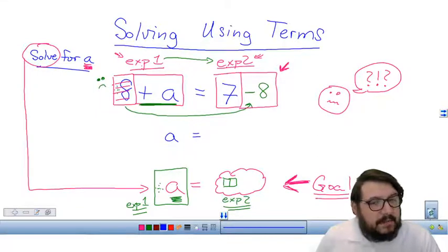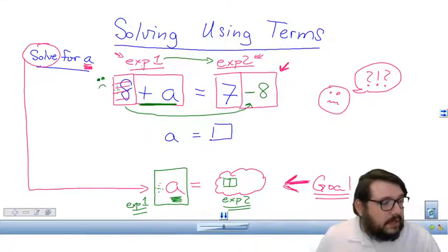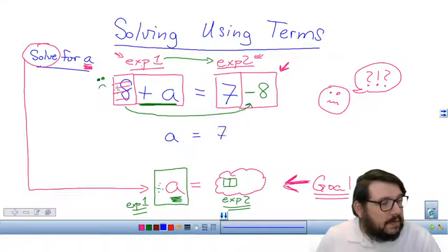On this side, I have an A term. And on this side, I have seven minus eight. Seven minus eight. Now, I'm going to do this a little bit longer than I normally would, just because you're learning this for the first time, or at least I think you are.